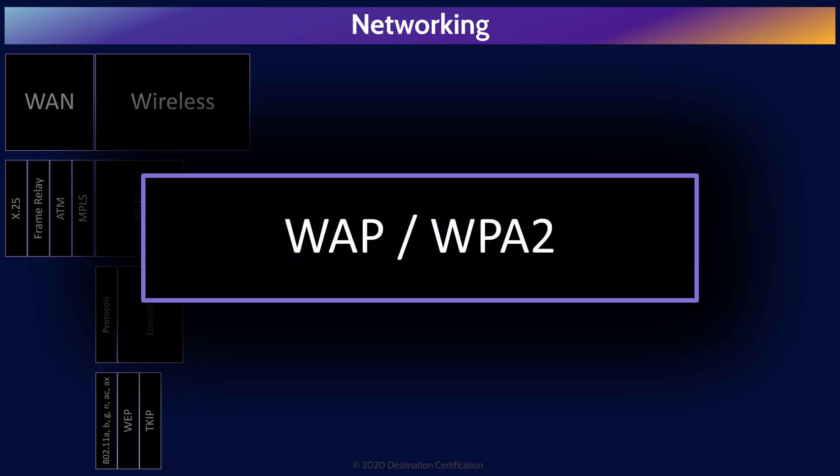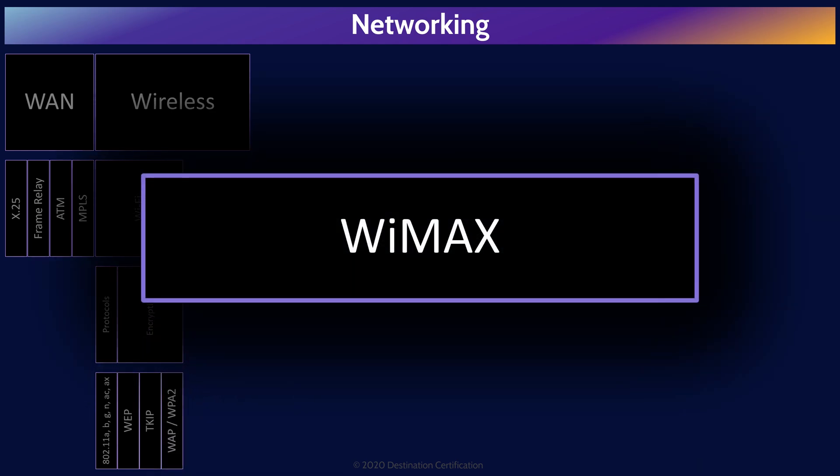WPA, Wi-Fi Protected Access, was meant as an interim protocol to help with the WEP fiasco until the much better protocol, WPA2, could be ratified. WPA used TKIP for encryption by default. WPA2 uses the AES encryption algorithm by default, and AES is much better than TKIP. Wi-Fi is used for creating local area networks within a range of about 100 meters. WiMAX, Wireless Interoperability for Microwave Access, is a protocol for creating wireless metropolitan area networks with ranges up to about 90 kilometers.